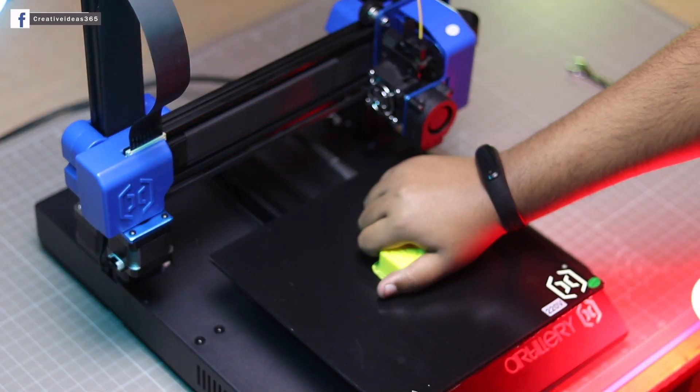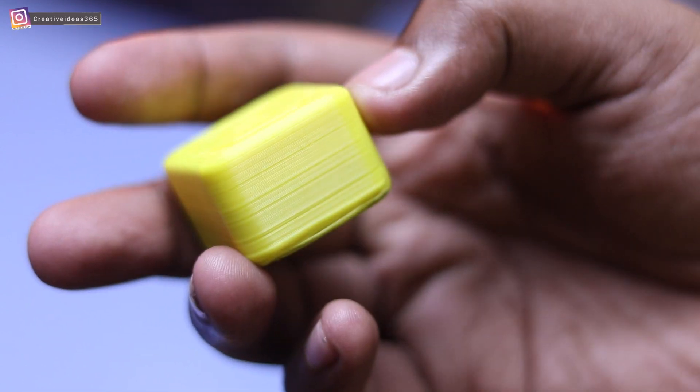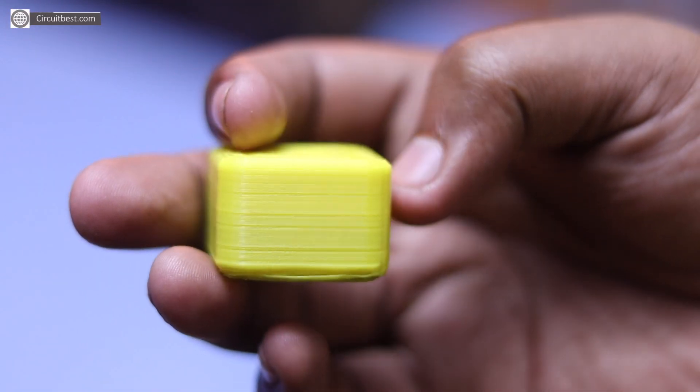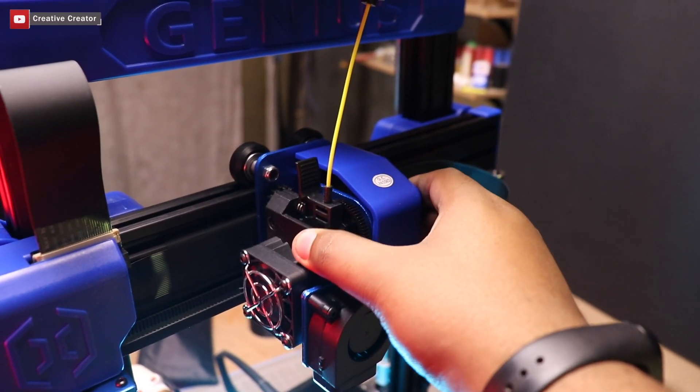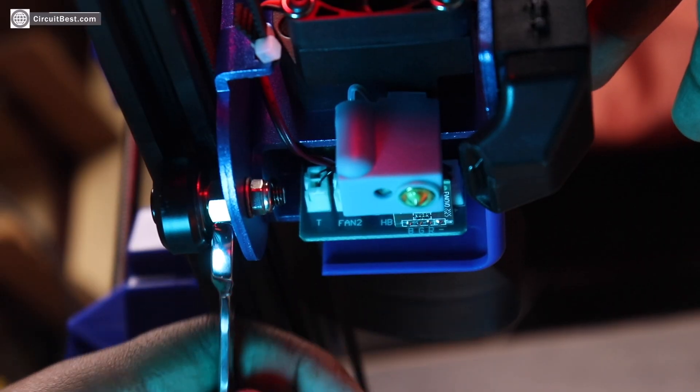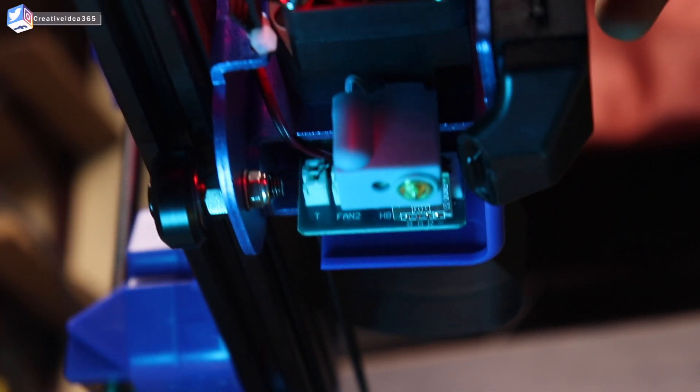The logo is printed, the top part and the bottom part turned out great but I was not satisfied with the wall quality. So after some tinkering I found that the extruder kit was a bit loose. So I tightened the nut with the provided wrench and printed it again.